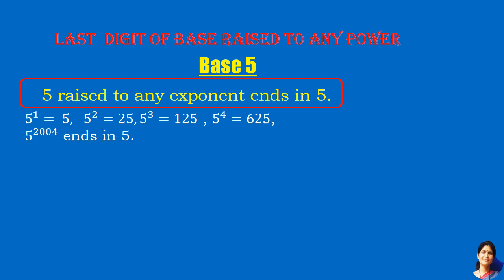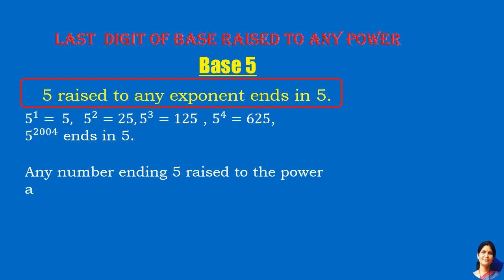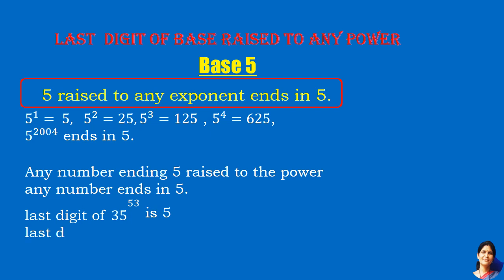Similarly, any number ending in 5 raised to the power any number also ends in 5. For example, 35 raised to the power 53 ends in 5. So, the last digit of 2005 raised to the power 2016 is also 5. This is a very simple thing.